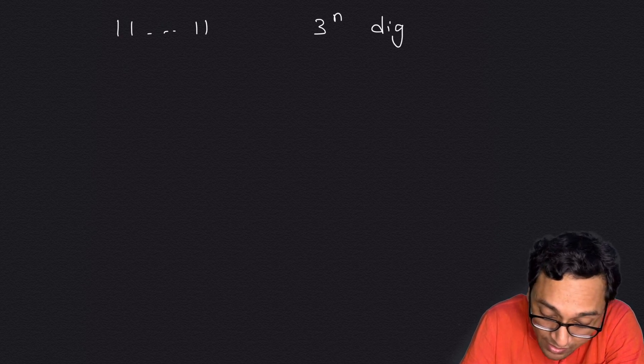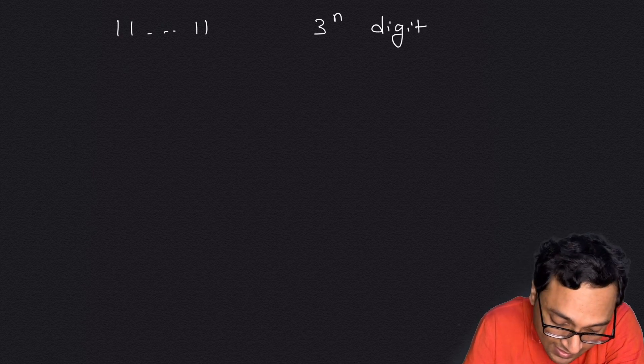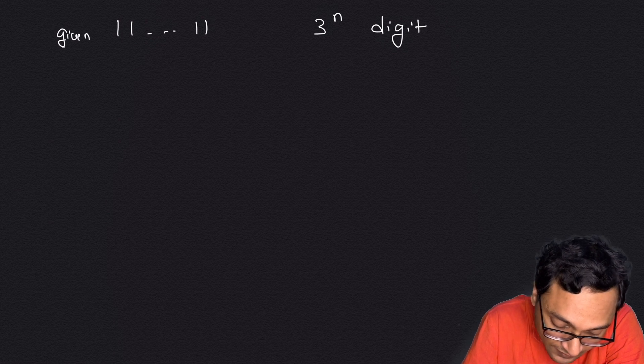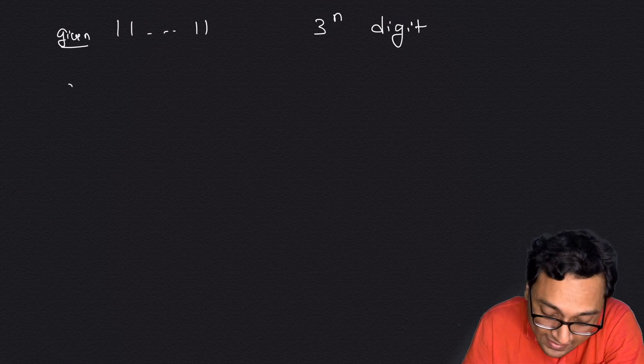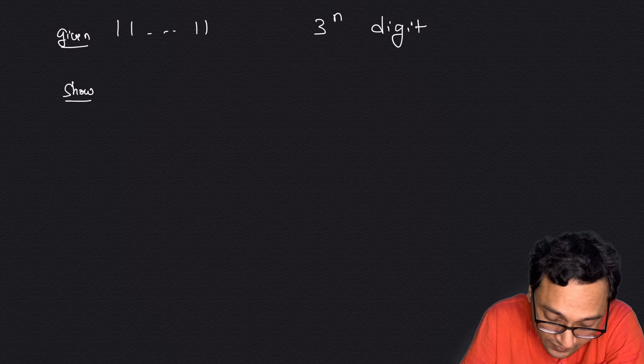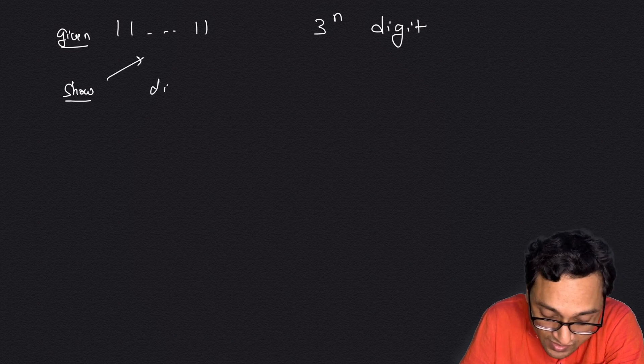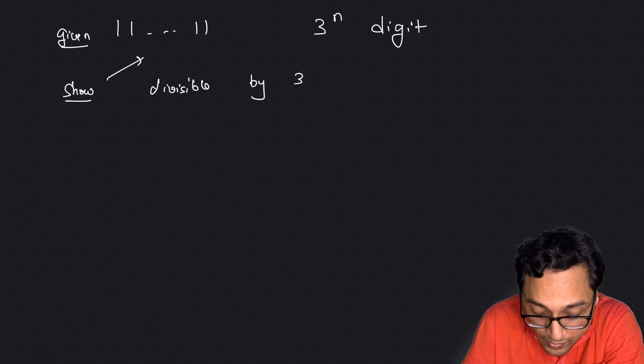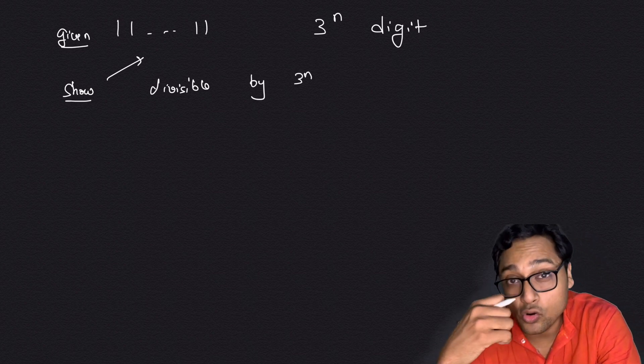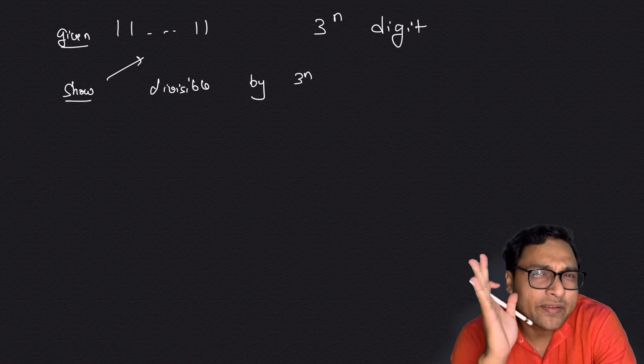This is a very beautiful problem from the ISI entrance. You have a 3-to-the-power-n digit number — a repunit made of 1s — and you have to show that this number is divisible by 3 to the power n. That's the goal.